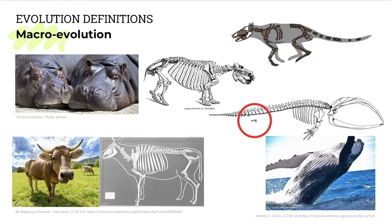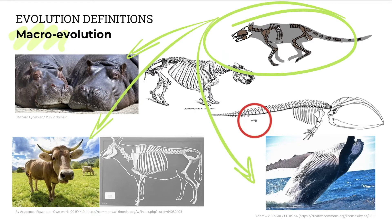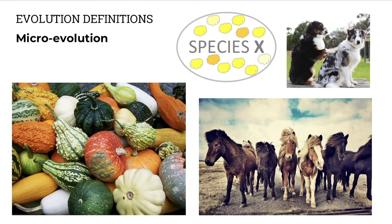Macroevolution is big evolution — large scale evolution, change between species over long periods of time. For example, some scientists suggest that one common ancestor, in this case a four-legged land-living animal, gave rise to hippos, cows, and whales over long periods of time. Macroevolution always involves the formation of new species — change between species — and we call this formation of new species speciation. Microevolution, on the other hand, involves changes within a species: a smaller scale of evolution over shorter periods of time, which we observe in the results of scientific investigations.